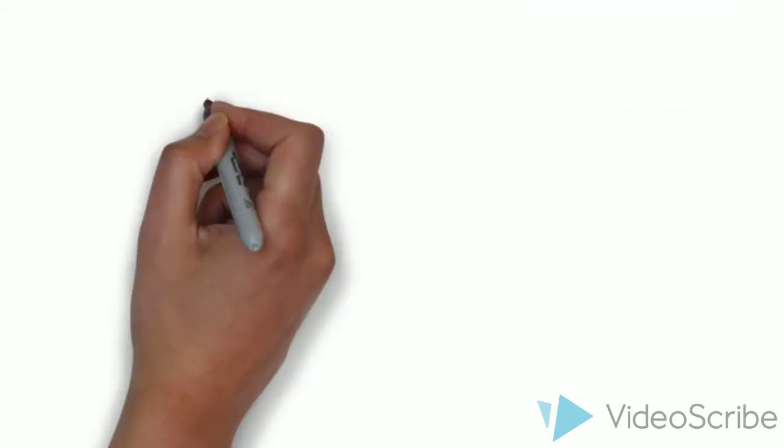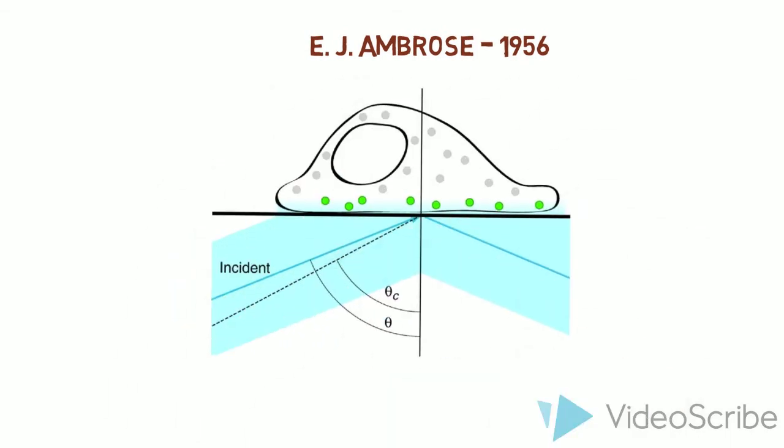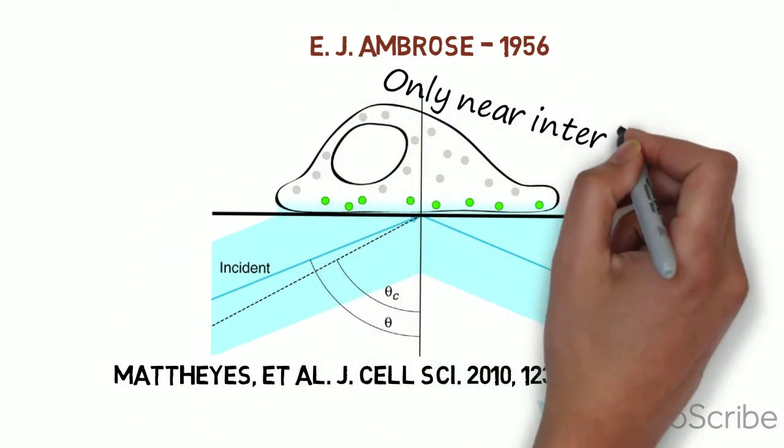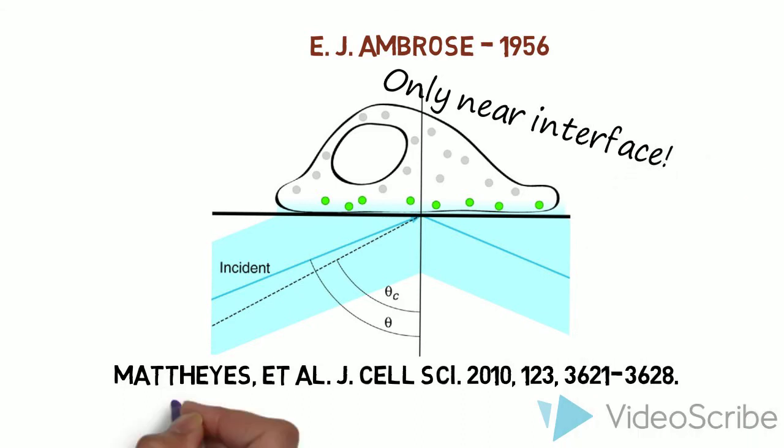This is where our friend E.J. Ambrose comes in, who in 1956 found a way to study the cell-glass interface by controlling the excitation scheme so that only cell parts very close to the glass interface would be excited. He used Total Internal Reflection.